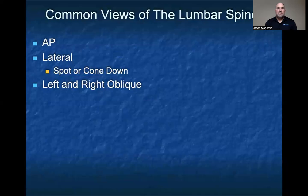The most common views of the lumbar spine that we get are the AP, the lateral, along with the spot or cone down as part of that lateral, and then the left and right obliques.